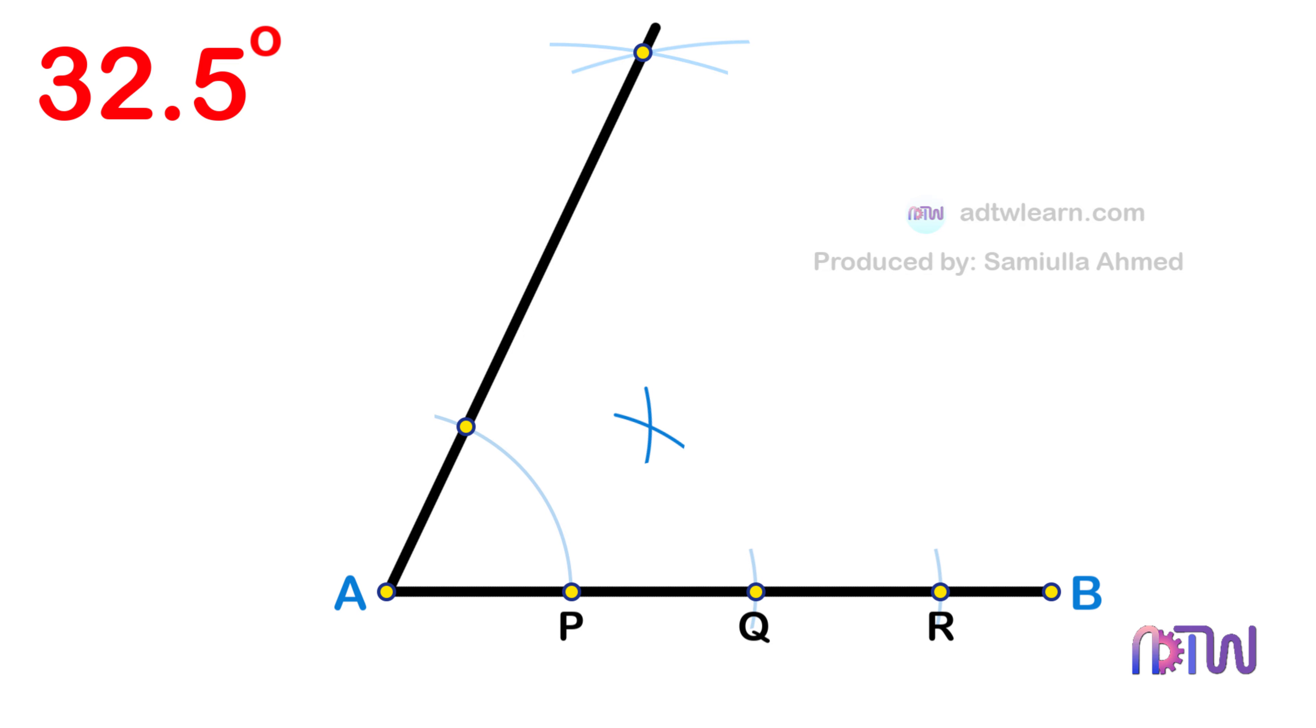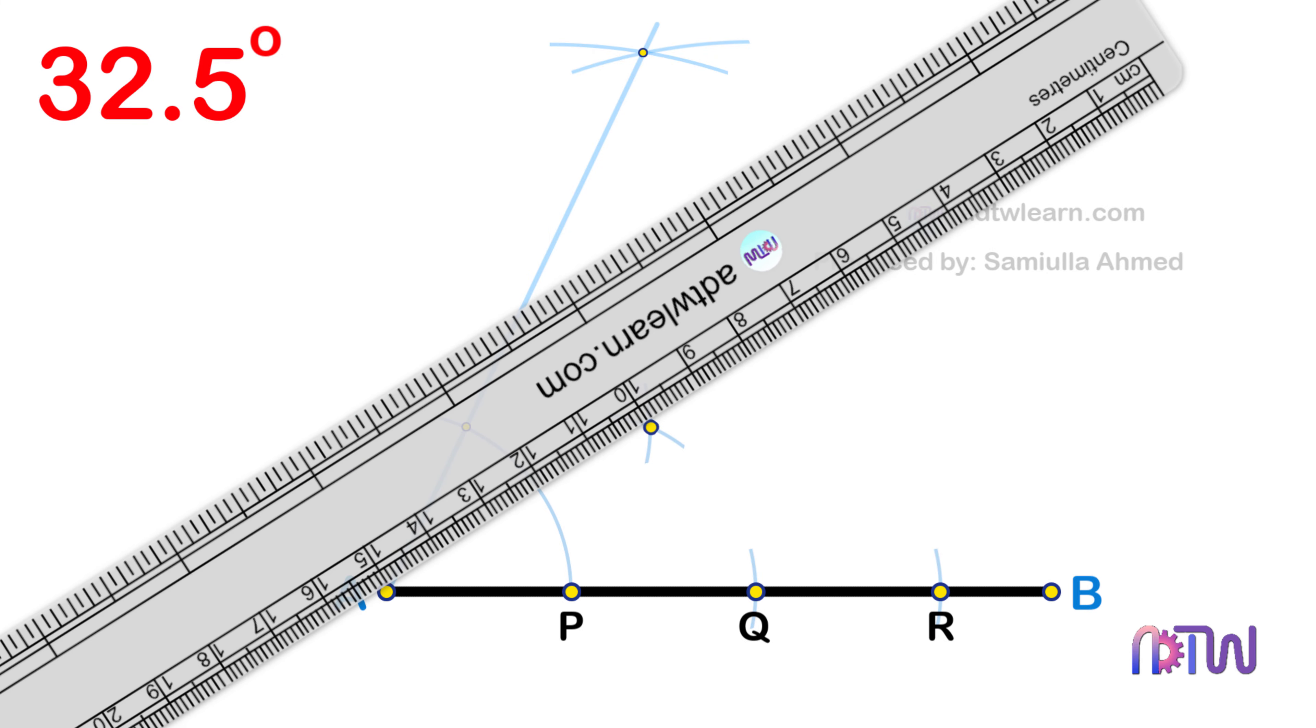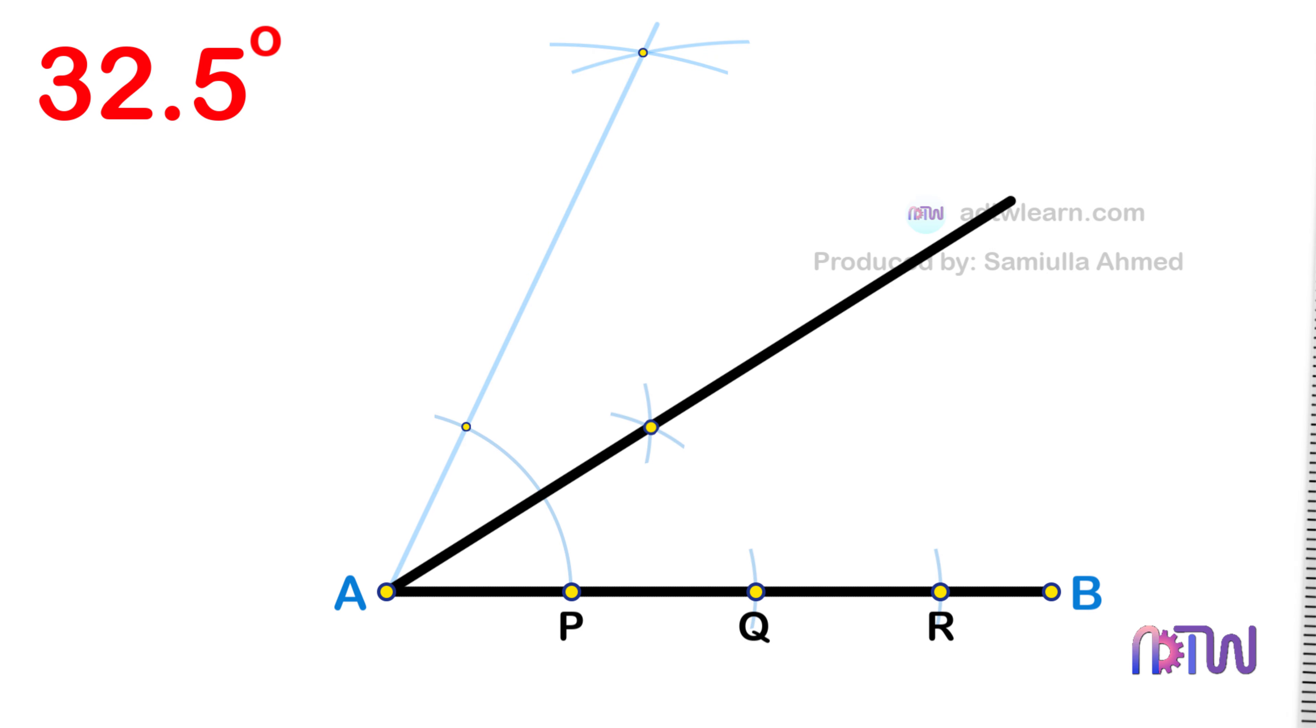In the end, draw a line passing through this intersection point from endpoint A of the line segment. This line will be inclined at the required 32.5 degrees. You can cross-check by using a protractor.